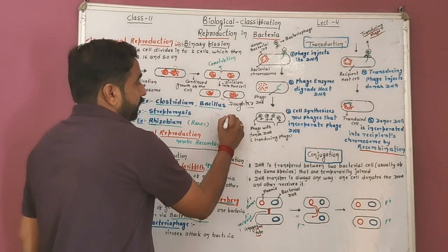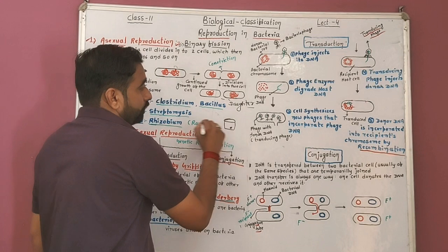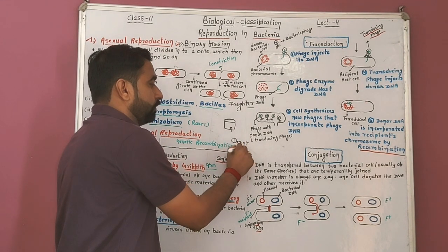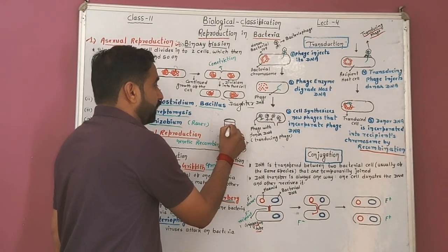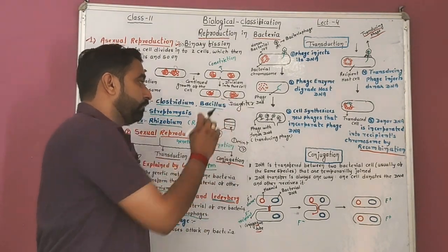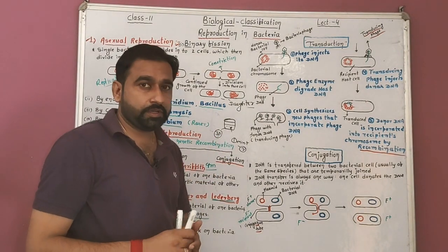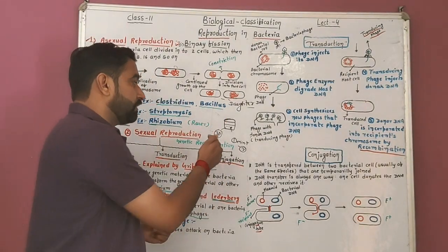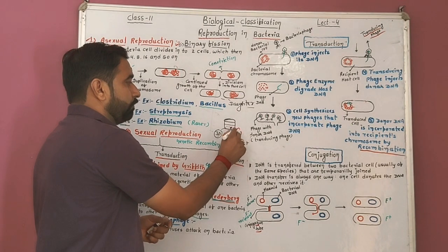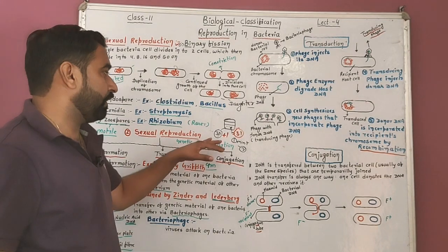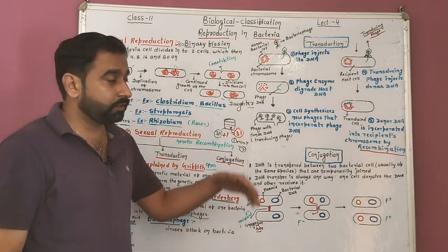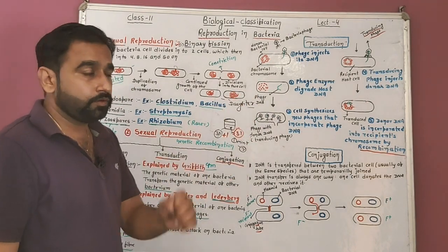Now here is a NEET question: In a beaker there is one bacterial cell, and it is dividing every one minute. So after one minute, two cells are formed. Now if the beaker becomes half-full at 30 minutes, at which minute will the beaker be completely full? Many students would write 60 minutes, or 45, or 15 — but the answer is 31 minutes. Because at 30 minutes it's half full, and in the next minute all cells divide, so the beaker becomes completely full at the 31st minute.